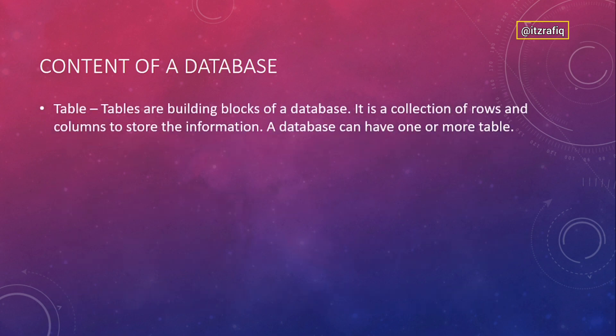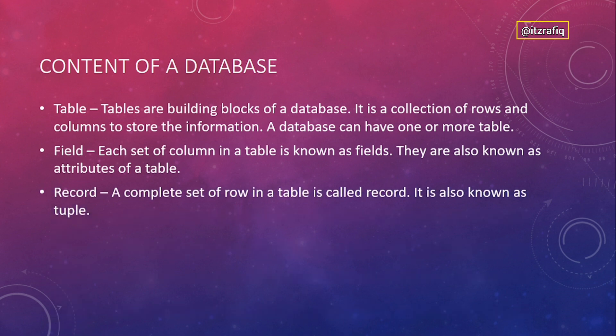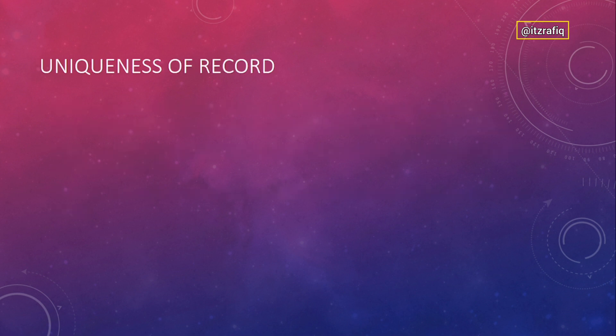Components of a database: the first component is a table — it is the building block, and tables are in the form of rows and columns used to store information. A database must have at least one or more tables. Each column of a database is known as a field, also called an attribute of a table. A complete row or line is called a record, also known as a tuple.